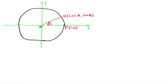Now we're going to put on a second angle. We're going to call this angle A, and that's going to give us a point on the unit circle that we're going to call point S, and it has ordered pair (cos A, sin A), again from the definition of the trig functions.